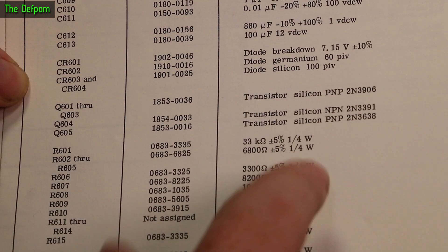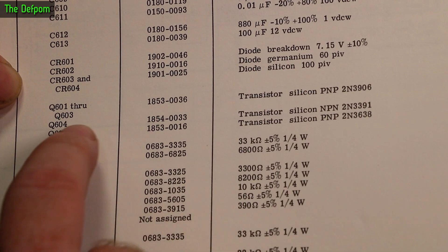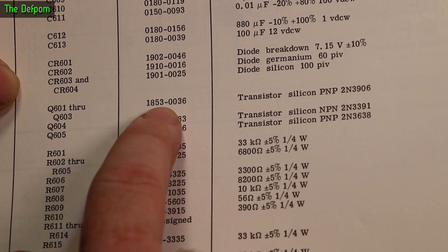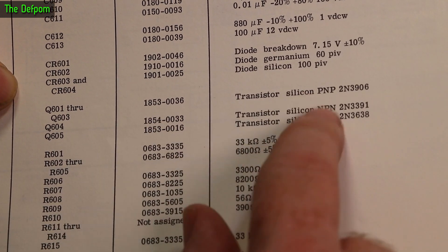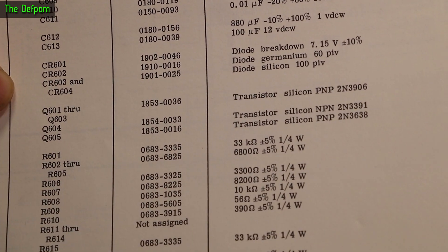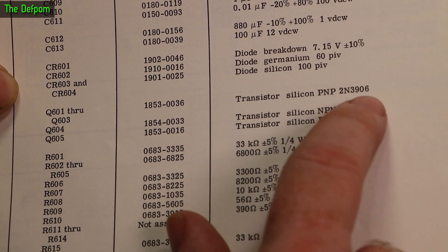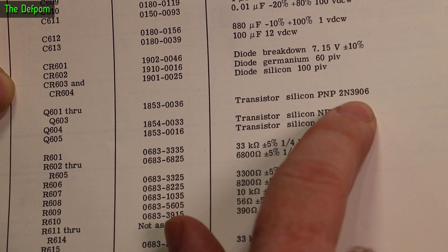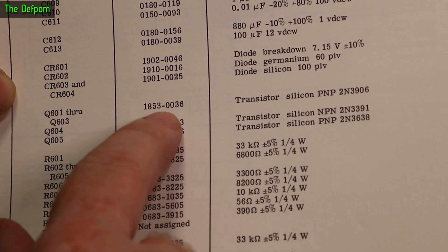So this is the one which suits that diagram, this particular parts list for this particular board, because there are different versions. Q601 to Q603, it's apparently a 2N3906, standard PNP part. However, the parts in here are metal case. The standard 2N3906 is not a metal case, it's a plastic case. So interesting. Slight difference there. Let's pull this board out again and check these part numbers.